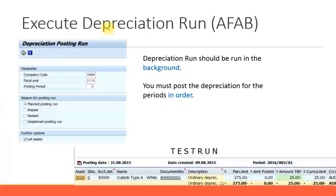So let's look at how to execute the depreciation run. The transaction code is AFAB. All you have to do is enter your company code, the fiscal year, and the posting period, and you can perform the depreciation run.